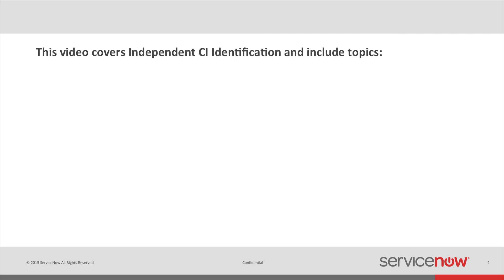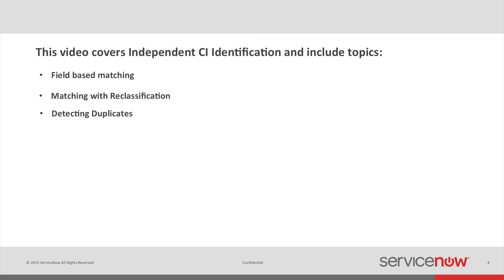This video covers independent CI identification, including three topics: field-based matching, which defines the criterion attribute for identifying a CI; matching with reclassification, which indicates when a CI needs to be reclassified; and detecting duplicates, which explains what happens when duplicate CIs are found.